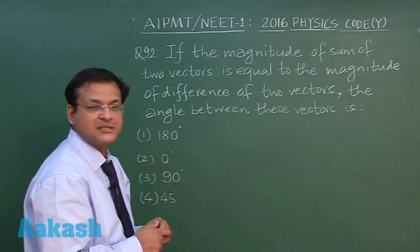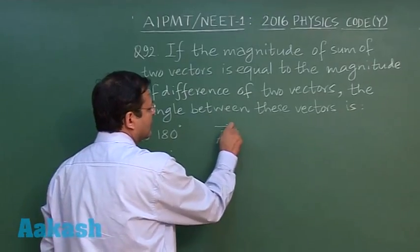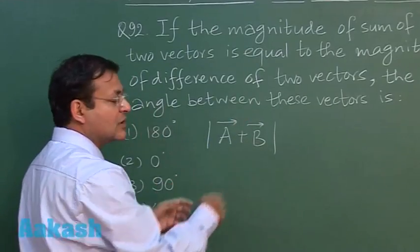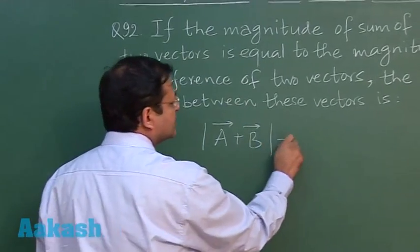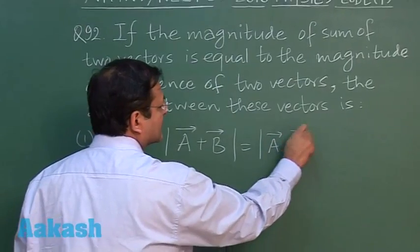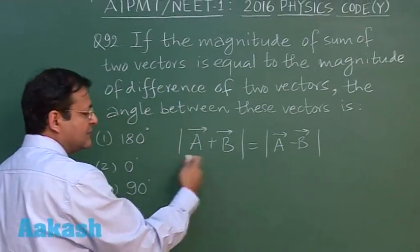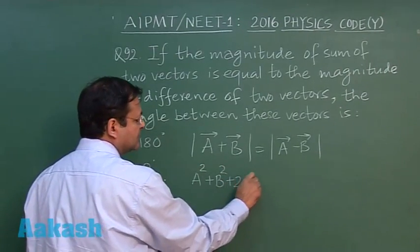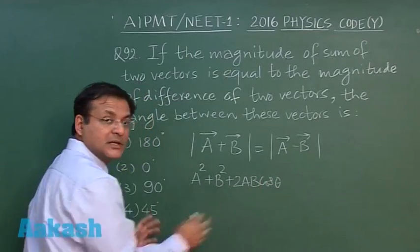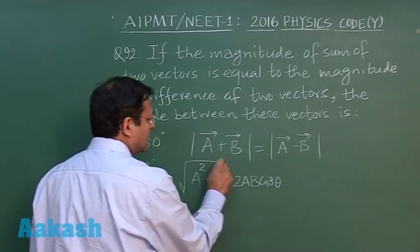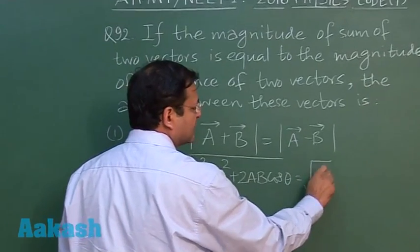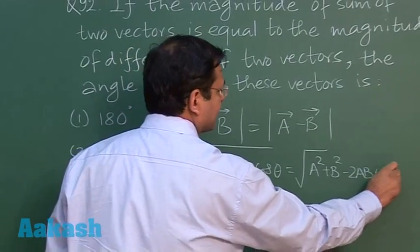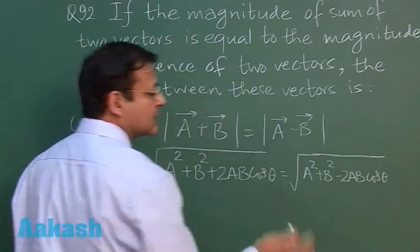This is asking you to equate these two. The sum of two vectors A + B with magnitude, so I have put the mod sign, is equal to the magnitude of difference. If you write down the elaborate formula: √(a² + b² + 2ab cos θ) = √(a² + b² - 2ab cos θ).